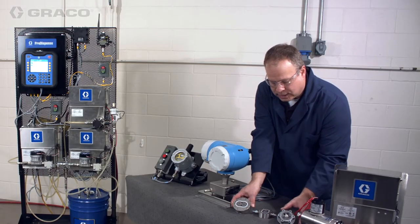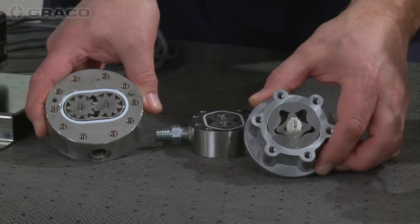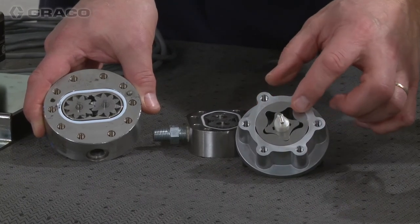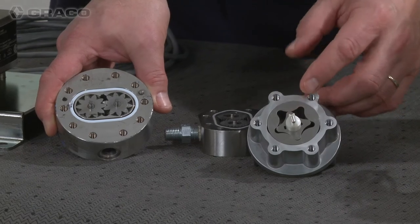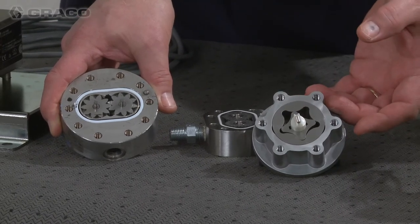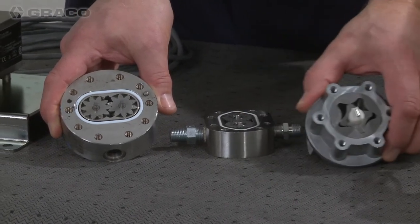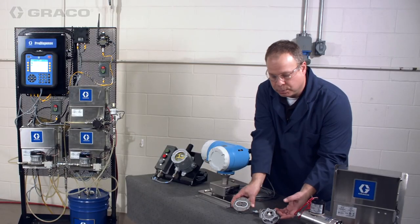The next thing I want to do is compare that to an oil dispense meter. And you can see, as compared to the other gear meters, we only have four teeth. So the resolution is much less. This is a more coarse meter for larger dispenses.